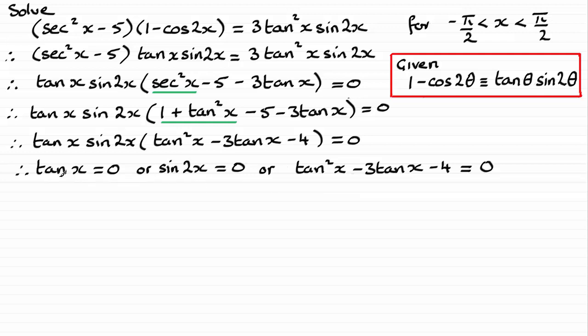Starting with this first one, tan x equals 0, that's easy because x will equal the inverse tan of 0 and the inverse tan of 0 is simply 0. Nice easy answer there.